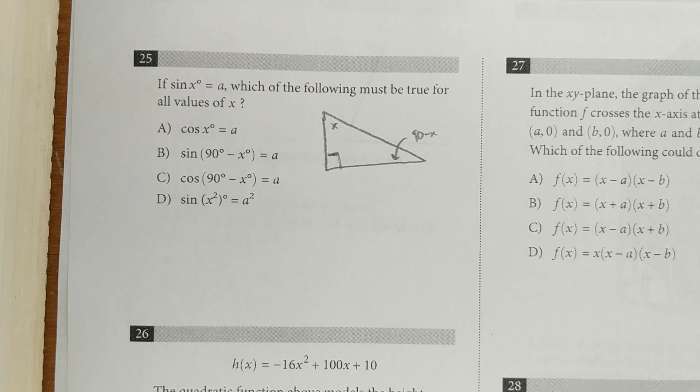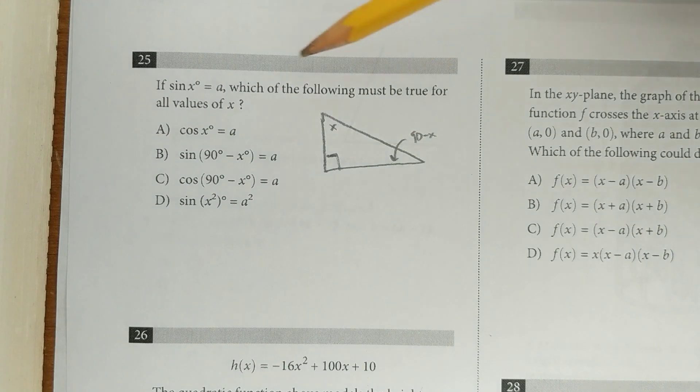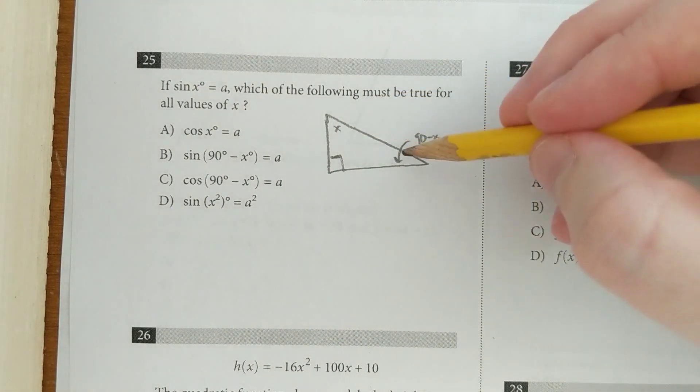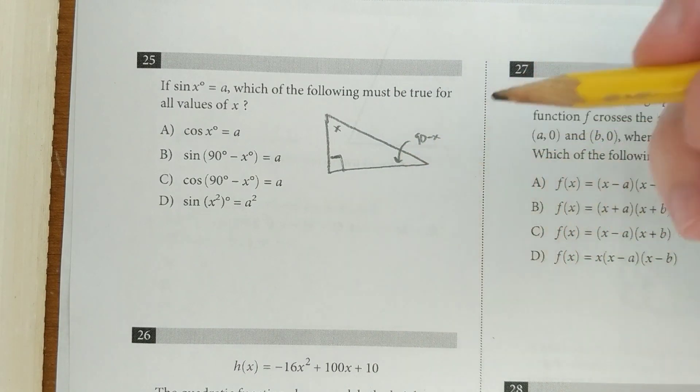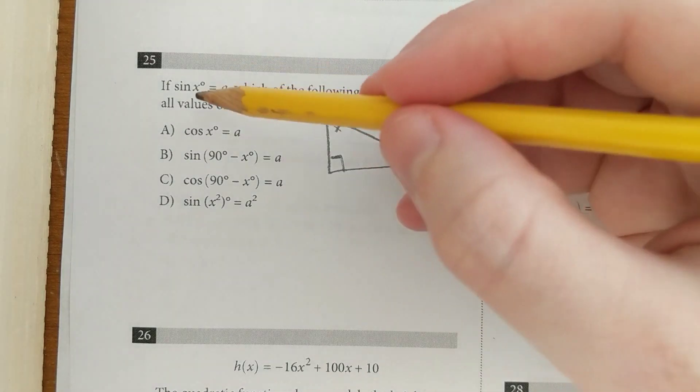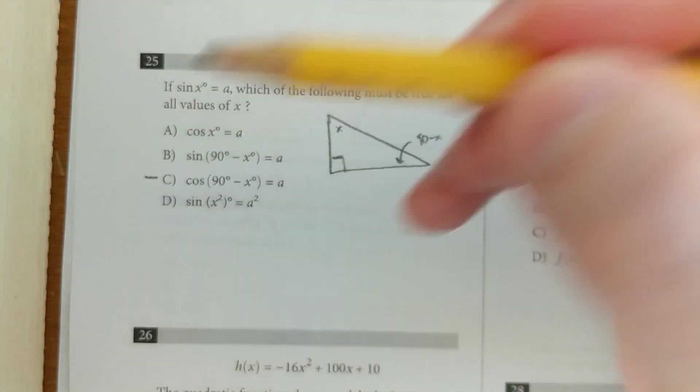When you're comfortable with this principle, you can answer some questions really fast. So here they say if the sine of x degrees is a, which of the following must be true for all values of x? Well remember, if this angle is x, the other angle on the right triangle is 90 minus x. So the sine of this is going to equal the cosine of that. So if sine of x equals a, cosine of 90 minus x also equals a. So that's just C.